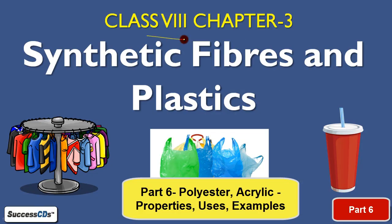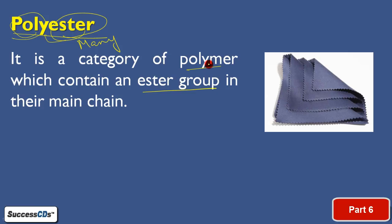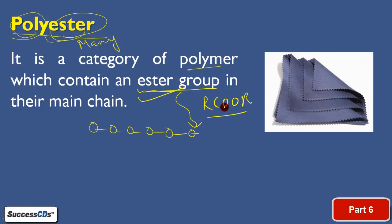Chapter 3 of class 8, Synthetic Fibers and Plastics. Polyester is a category of polymer — 'poly' means made up of many small units, and those small units are ester groups. In higher classes you'll study different functional groups including the ester group (RCOOR'). When many ester groups join together to form a chain, that gives rise to a polyester.